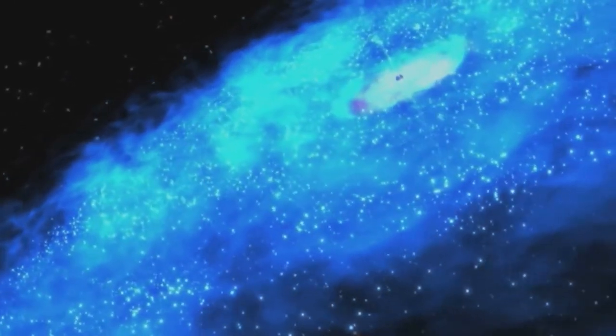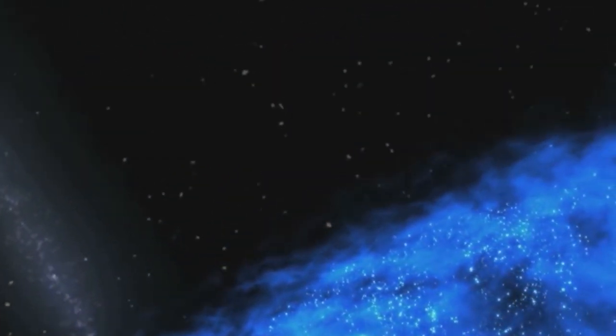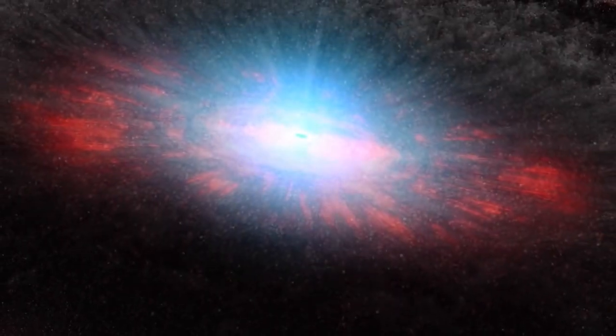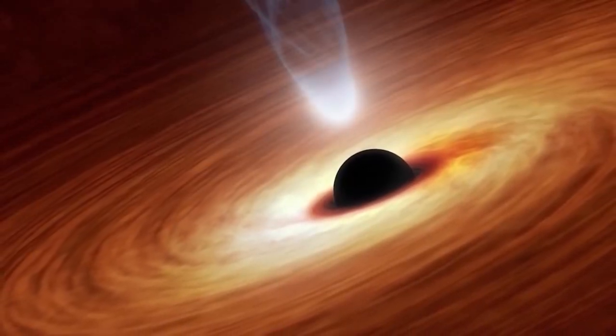A spinning black hole and the rapidly spinning material it is falling into produce magnetic fields that wound up into a twisted cone that extends millions of light years into space and extracts torrents of deadly radiation.